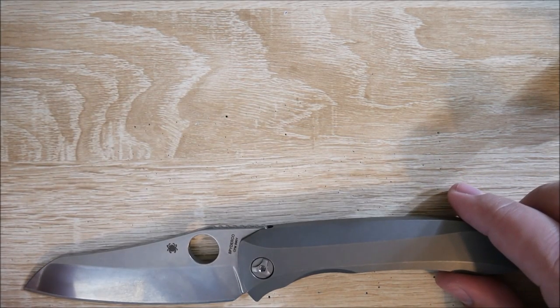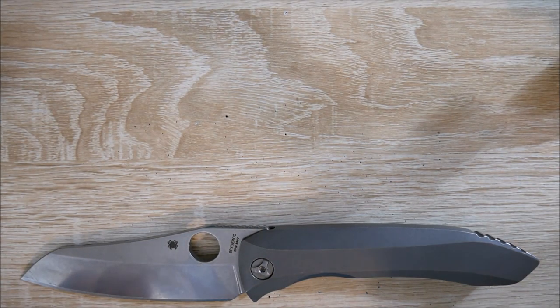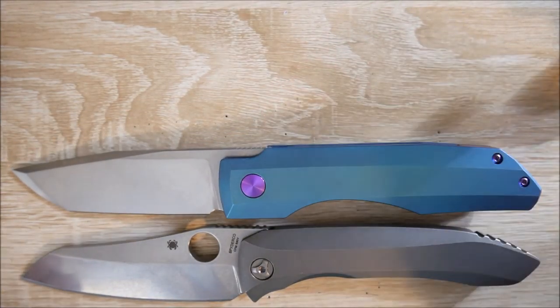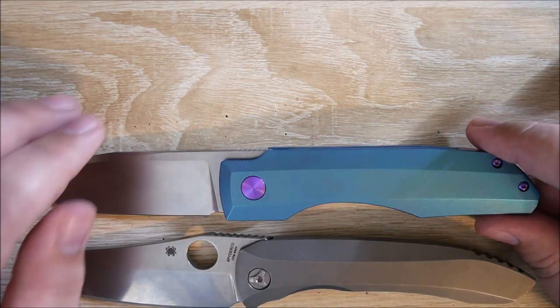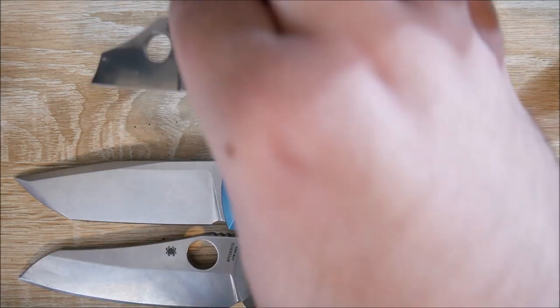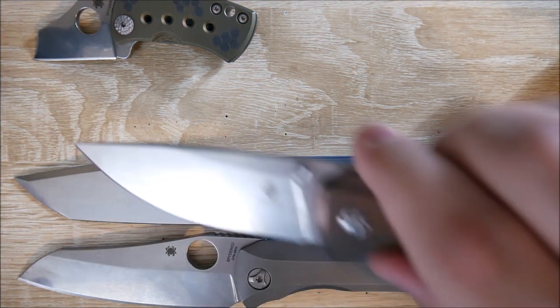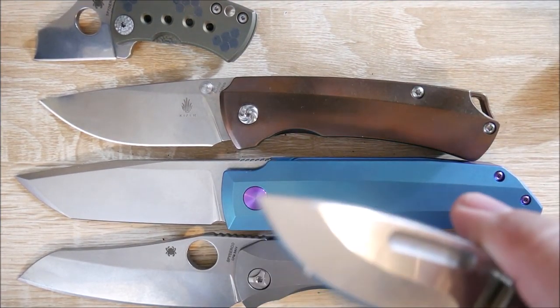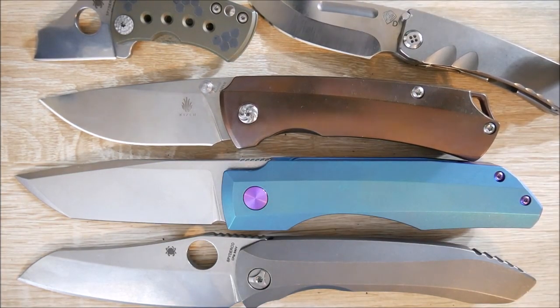So just to recap, at number one, we have the Spyderco Paisan. See if all these will fit on the screen here. Probably not. At number two, we have the Vero Impulse. Let's see if I can count that down a little bit. Number three was the Spyderco McBee. Number four was the Kaiser T1. Oh yeah, I'm gonna go through all of these. And number five, oh gosh, the Medford Dress Marauder.